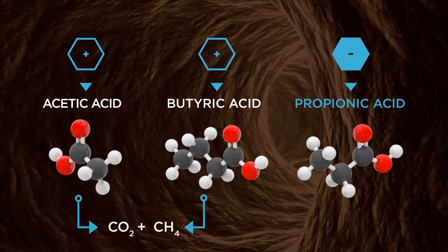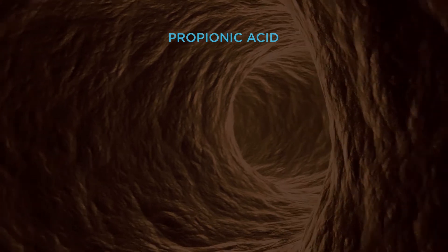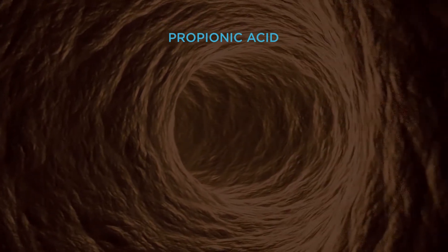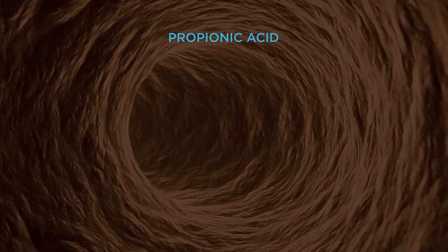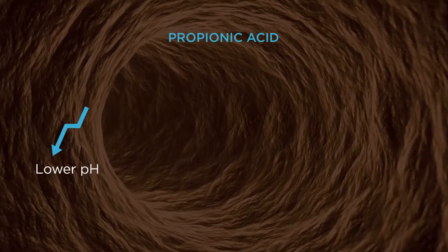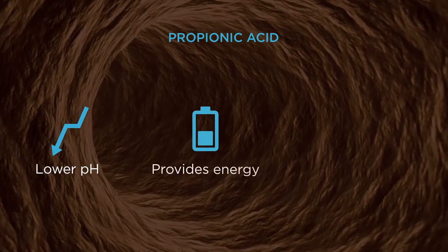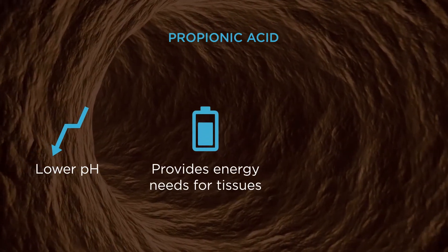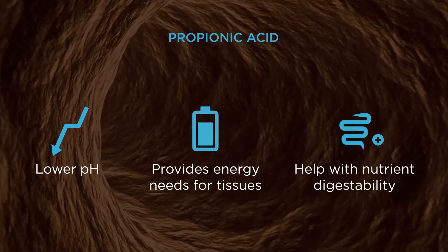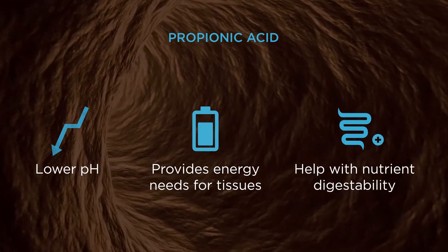Fermentation by gram-positive bacteria produces more carbon dioxide and methane than that of gram-negative bacteria. Less carbon dioxide and methane production is a benefit for the pig's intestinal process and producers alike. Gram-negative produced propionic acid has additional benefits as well — it not only contributes to a lower pH in the gut and provides energy needs for tissues, but it also helps nutrient digestibility, all of which contribute to a more efficient hindgut.